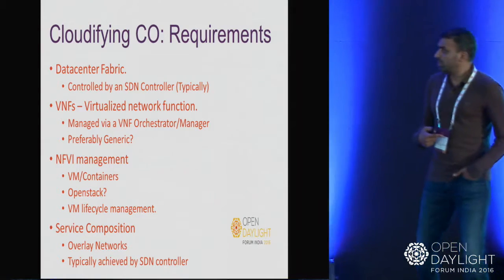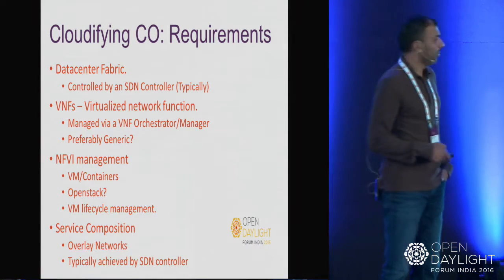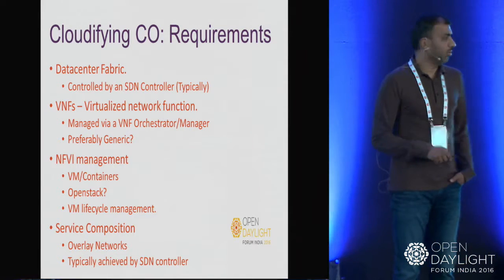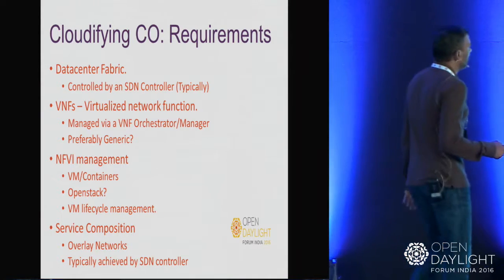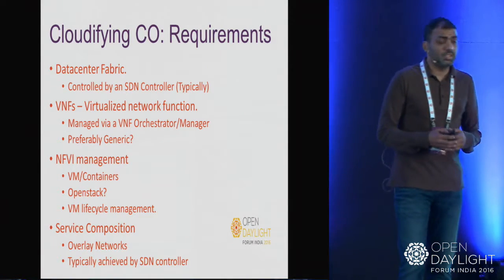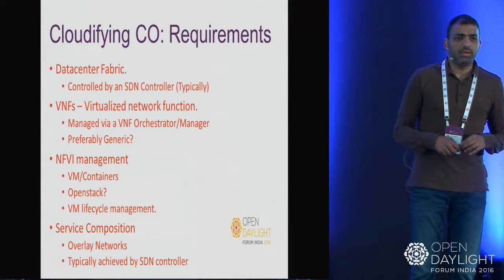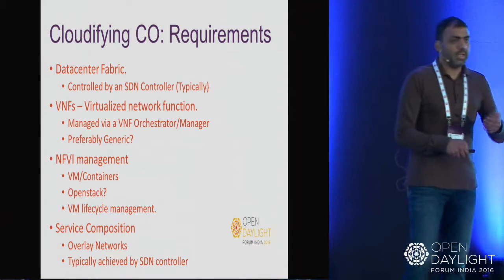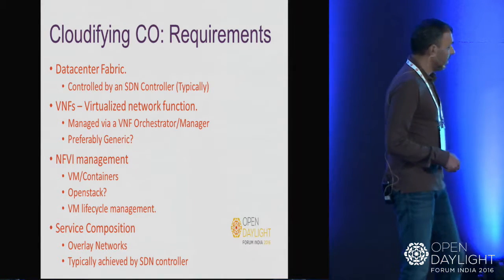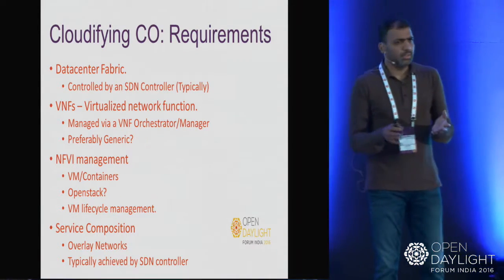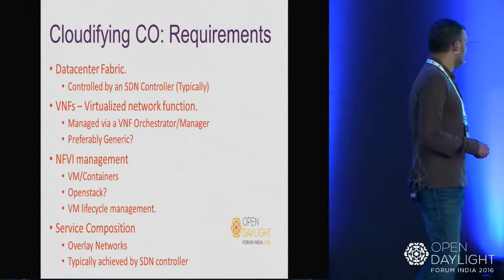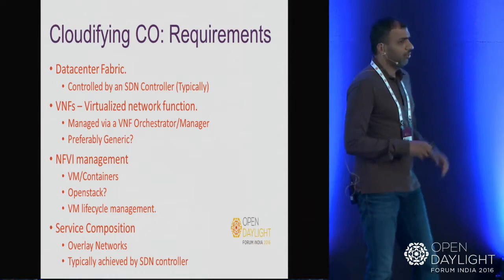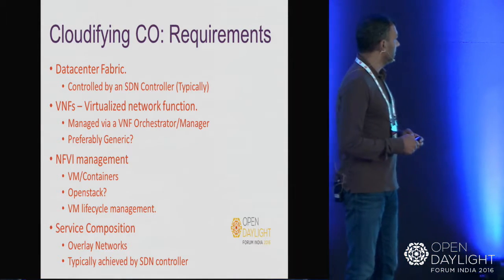We need OpenStack, containers, VM lifecycle management, service composition, and overlay network management — typically controlled by the SDN controller. This is the high-level requirements summary for cloudifying the central office. The architecture has a blue box receiving all traffic from the access function; control traffic goes to the SDN controller and comes back, while data traffic moves through multiple VNFs and out to the core network.